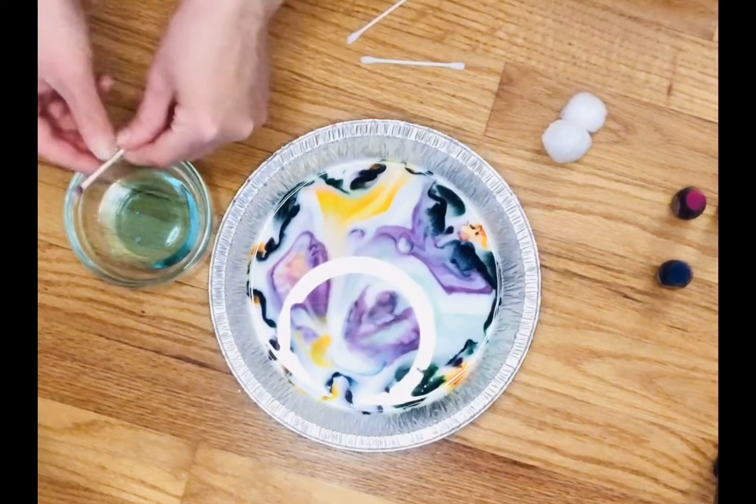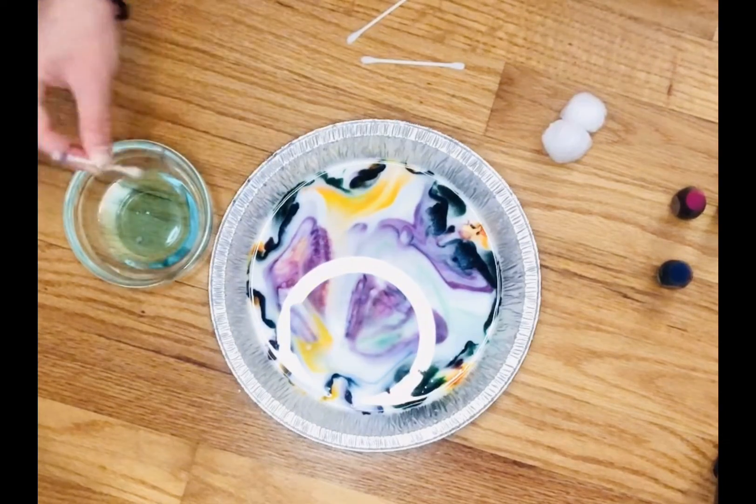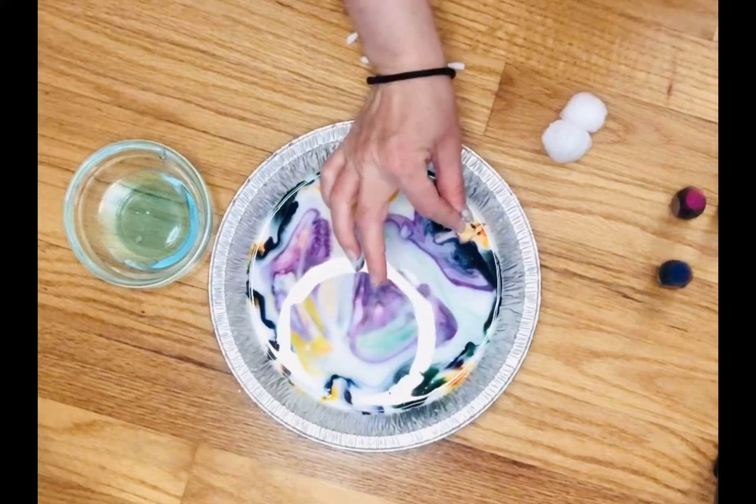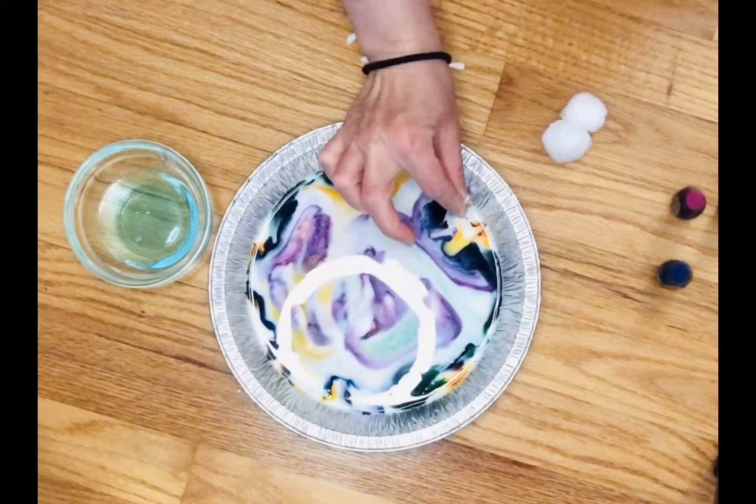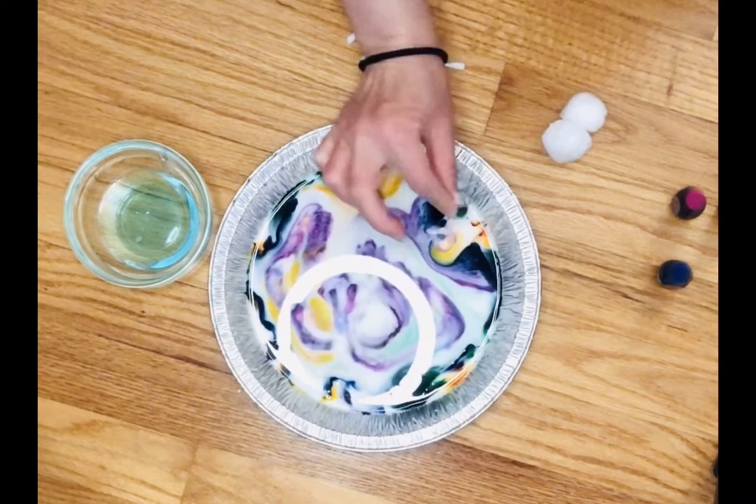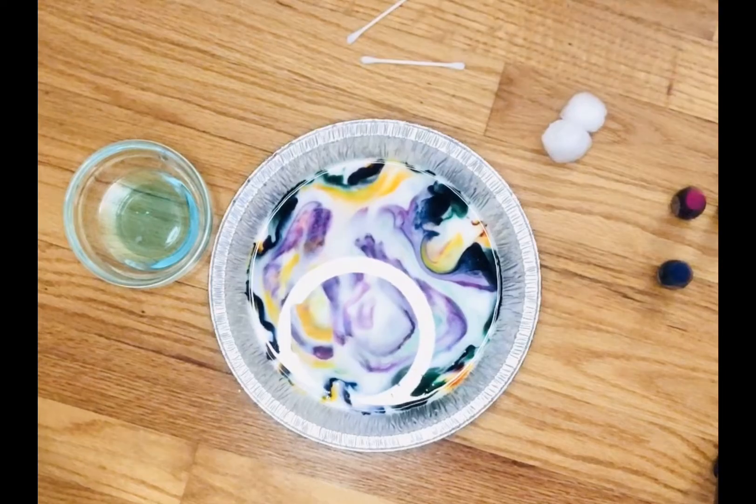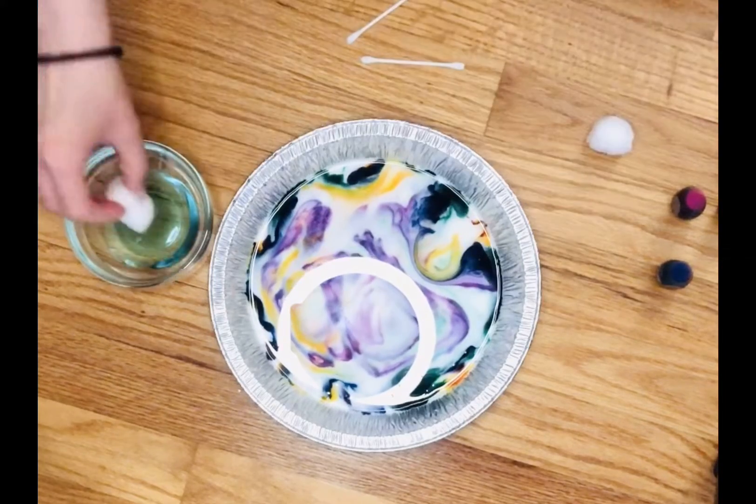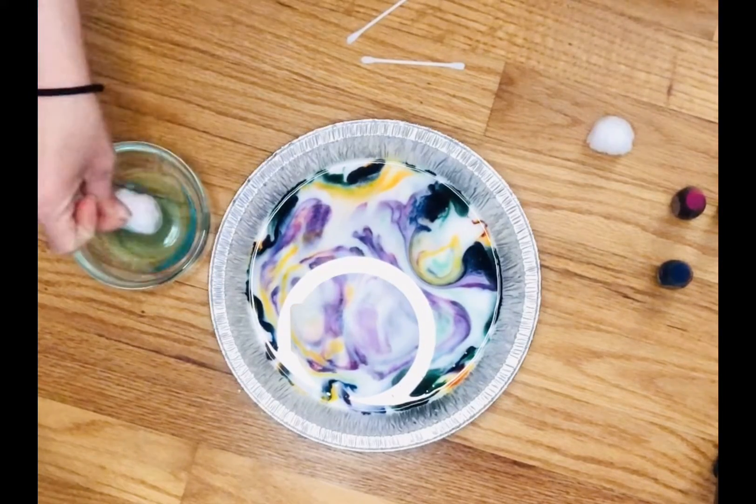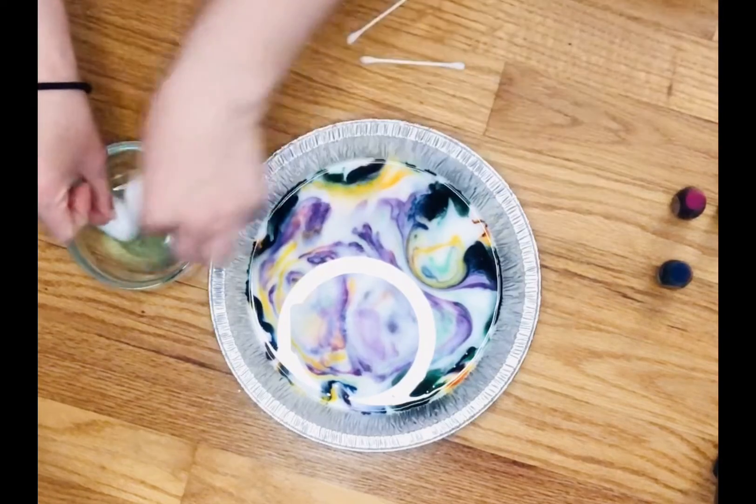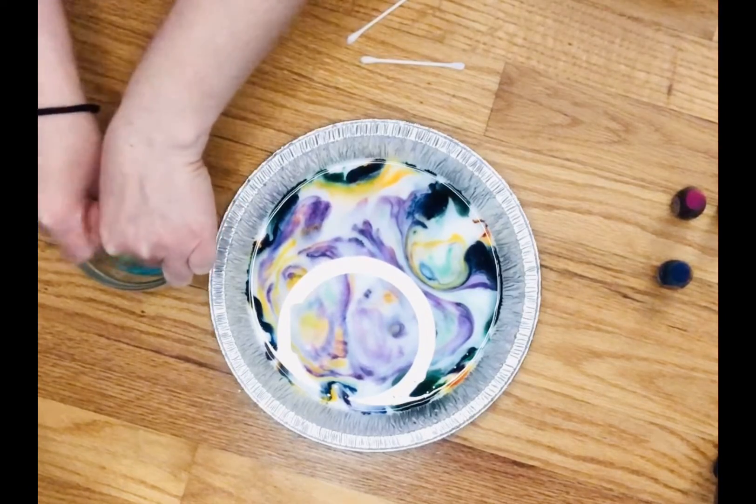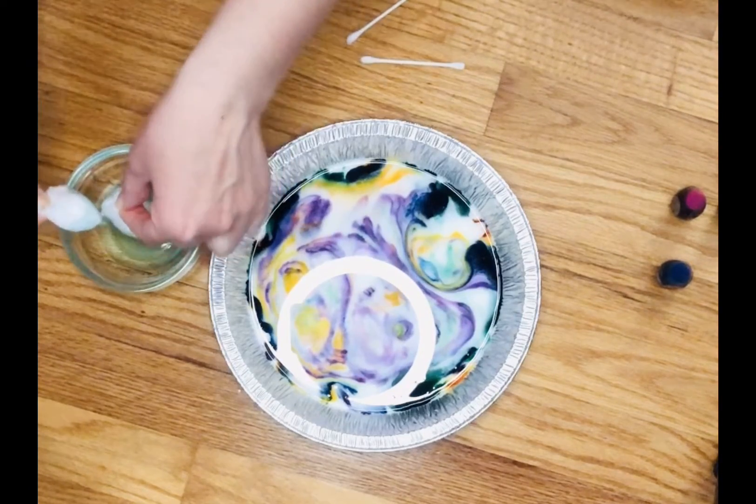Oh, I need to dip it back into the dish soap. It's harder to see, but the colors are starting to move away. Now I'm going to try it, but I'm going to dip the cotton ball in the dish soap, and I'm going to do two cotton balls and put them at either end of my dish and see what happens.